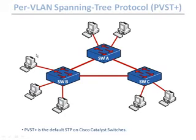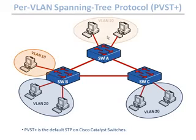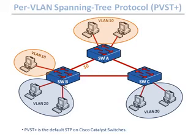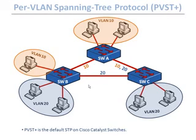Now let's revisit VLANs and trunks. Imagine two hosts in VLAN 20, two more in VLAN 20 on another switch, and other hosts in VLAN 10. The trunk between switch A and B carries only VLAN 10, the trunk between switch B and C carries only VLAN 20, and the trunk between switch C and A carries both VLANs. Now if we add spanning tree with switch A as root bridge, its ports are designated forwarding, and switch B and C select their root ports.